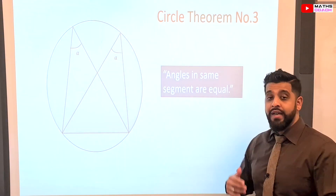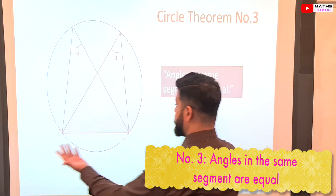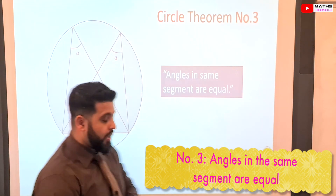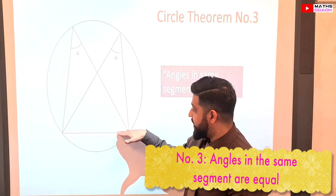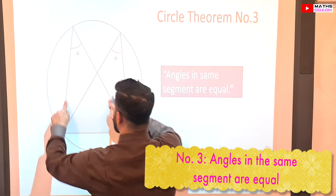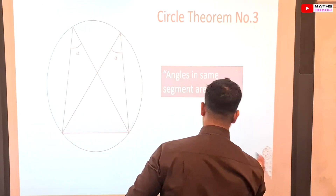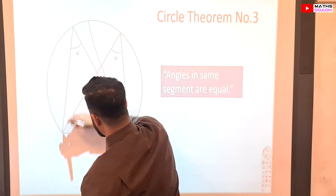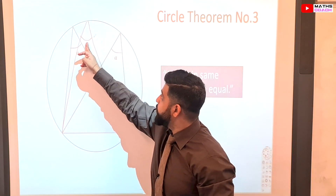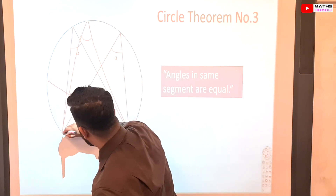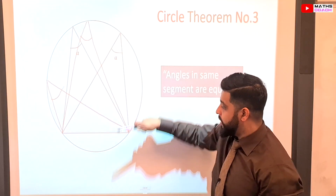Circle theorem number three is related to the first theorem. Angles in the same segment are equal. Segments are the minor and major segments divided by a chord. If you have two angles in the same segment coming from the same arc or the same chord, then they will be equal. If I draw a third line, it will also be the same angle. So if one angle is 40 degrees, all angles in the same segment will be 40 degrees.